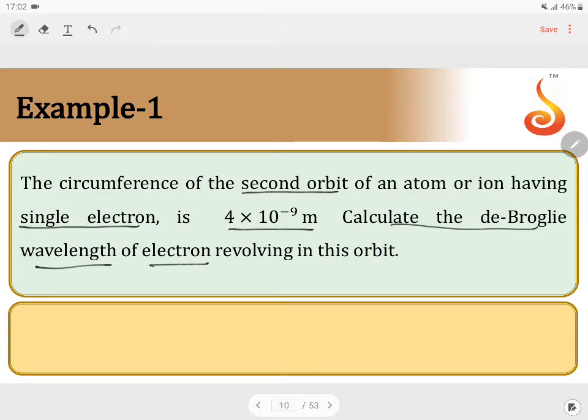In the second orbit, what is the de Broglie wavelength we have to calculate. They have given a hint that second orbit, when it's a second orbit, the n is equal to 2.